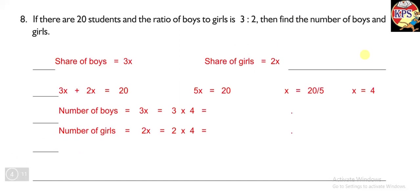Good morning students. In this video we are going to discuss our next two questions: question number eight and question number nine. In question number eight it is given: if there are 20 students and the ratio of boys to girls is 3 ratio 2, then find the number of boys and girls.